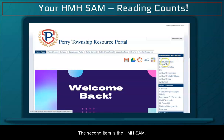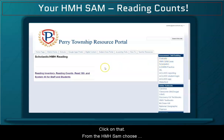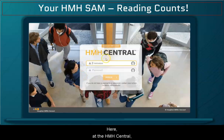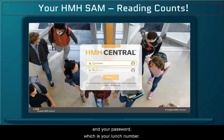The second item is the HMH SAM — click on that. From the HMH SAM, choose Reading Inventory, Reading Counts, or Read 180. Here at the HMH Central, you type in your username, which is your student ID, and your password, which is your lunch number.